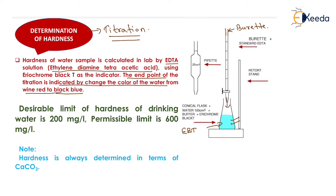The desirable limit of hardness for drinking water is 200 mg/L — water with hardness less than 200 mg/L is fit for drinking. For other purposes, this limit can be extended up to 600 mg/L, which is the permissible limit. Note that hardness is always expressed in terms of calcium carbonate (CaCO₃), including carbonate/bicarbonate hardness, alkalinity, and non-carbonate hardness.